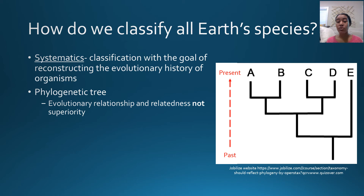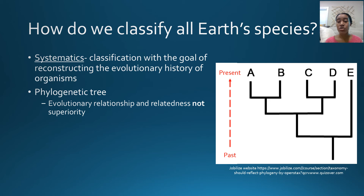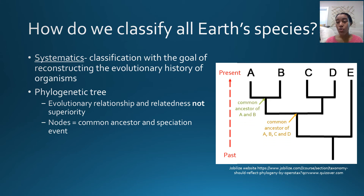Phylogenetic trees show you evolutionary relationships and relatedness between species — they do not tell you superiority. A phylogenetic tree might be misread as indicating that the organism furthest left or right is most advanced, but that is not the case. It is just telling you the evolutionary relationship and how related species are to one another, not an indicator of superiority. In a phylogenetic tree, we have nodes — these branching points represent a common ancestor or a speciation event where one species split into two distinct species.